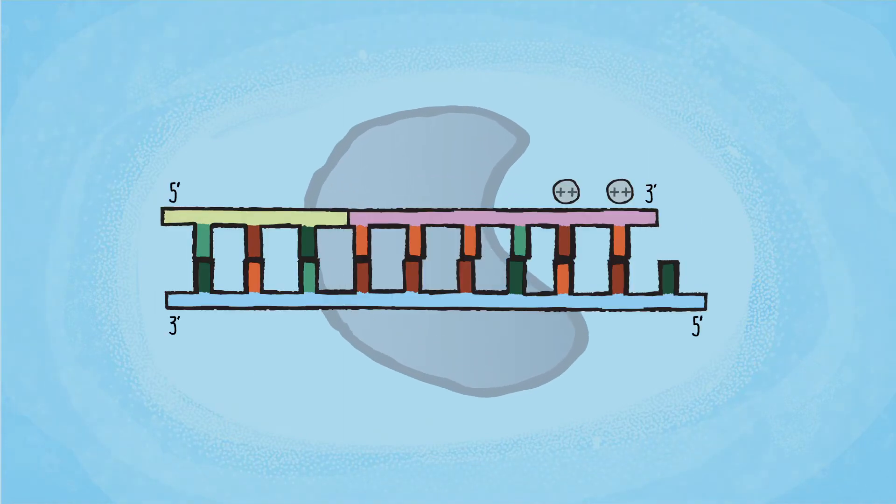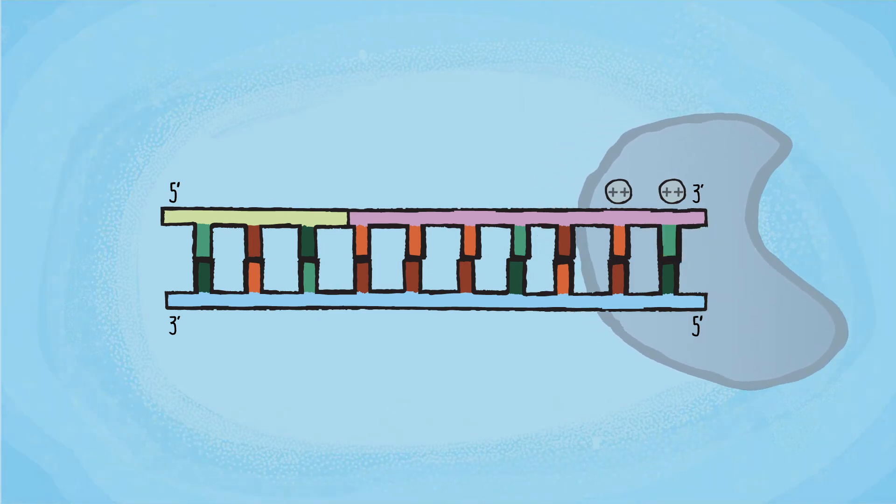The final extension step is to ensure that all of the products are fully extended by giving the polymerase a little extra time to add any missing nucleotides and allow for all the products to be double-stranded.